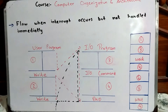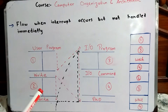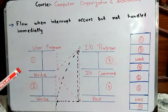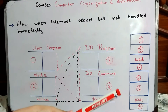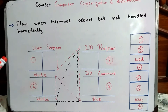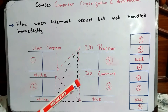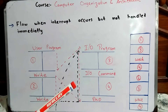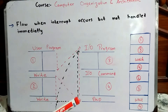Now we will discuss the flow of control when an interrupt occurs but is not handled immediately. There are two diagrams. One thing to clarify: the numbering 1, 2, 3, 4 is just for reference in the diagram. You can see here is the user program area, the I/O program area, and the I/O command area, where the I/O device is assigned and then the CPU continues the remaining execution and ends.